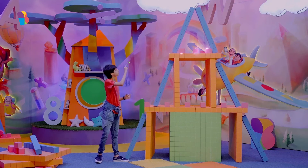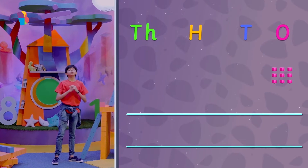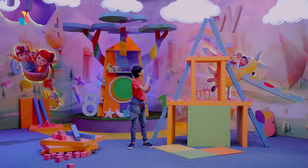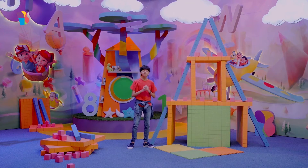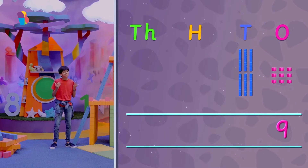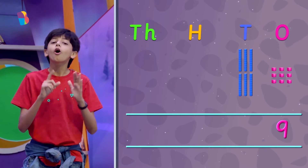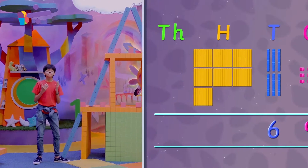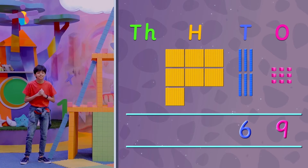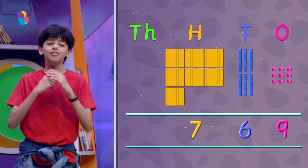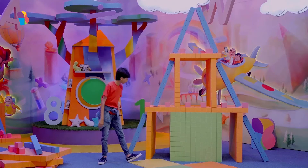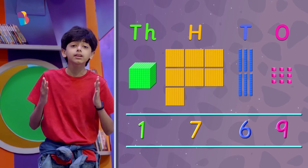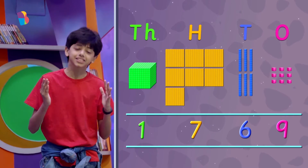So we have nine unit cubes — that's the number nine in the ones place. We have six rods, so that's sixty in the tens place. Then we have seven flats, so that's seven hundred in the hundreds place. And lastly, we have one big cube, which represents one thousand. So our total number is one thousand seven hundred and sixty-nine.